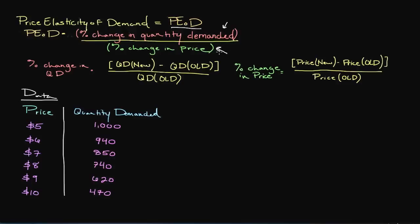But in order to get that, we have to figure out, well, first, what is our percentage change in quantity demanded? And of course, what is our percentage change in price? And so we have individual equations for each of those to get to those two figures.